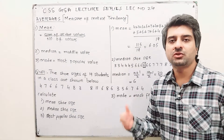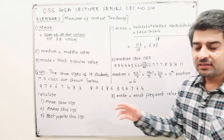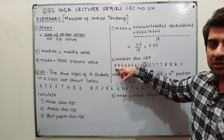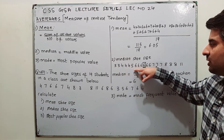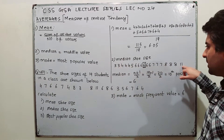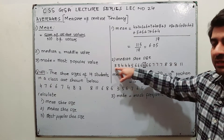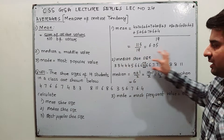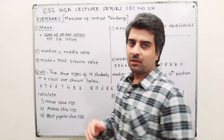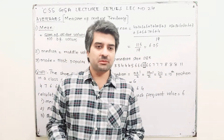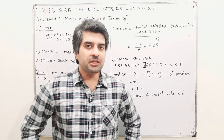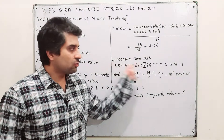To calculate the median, arrange your data in ascending order — the smaller shoe size written first, increasing to the largest. This is the smallest shoe size and this is the largest. After arranging in ascending order, there are different techniques to calculate the middle value.